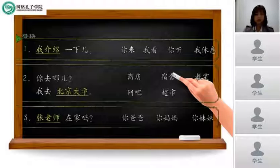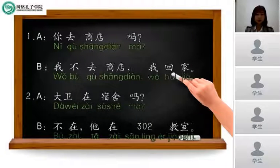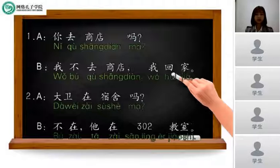So let's do the second part to practice the conversation. The first one: 你去商店吗? 我不去商店, 我回家. So, you go to the store? No I don't, I'm going to my home. Can you use the other words to replace the dialogue? For example, 你去超市吗? 我不去超市, 我去网吧. You go to the supermarket? No, I'm going to 网吧. 对了.